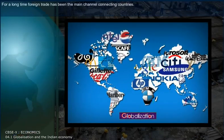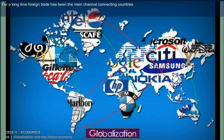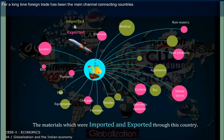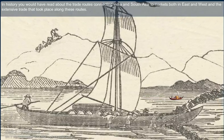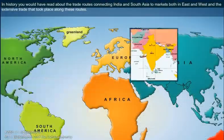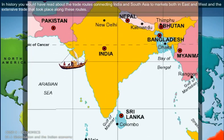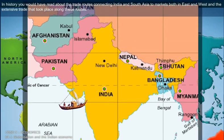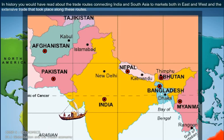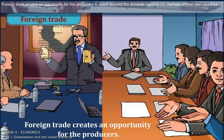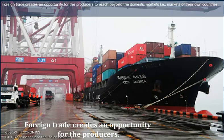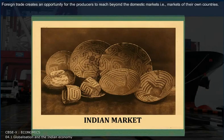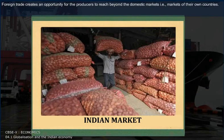For a long time, foreign trade has been the main channel connecting countries. In history, you would have read about the trade routes connecting India and South Asia to markets both in the East and the West. Extensive trade took place along these routes. Foreign trade creates an opportunity for the producers to reach beyond the domestic markets, i.e. markets of their own countries.